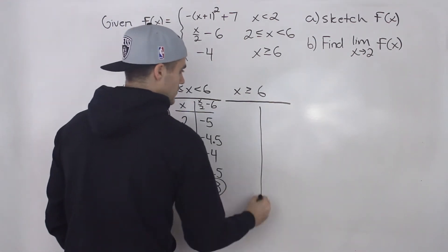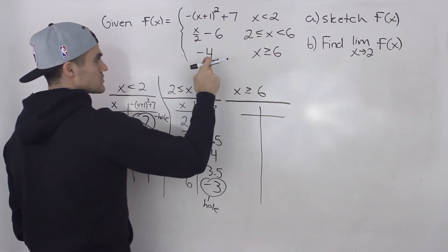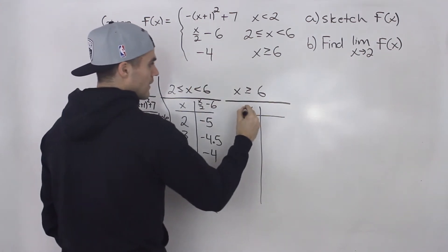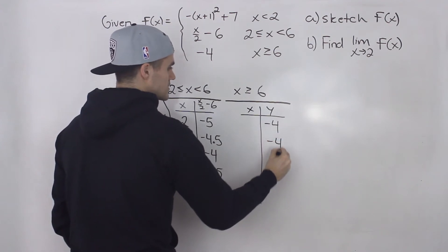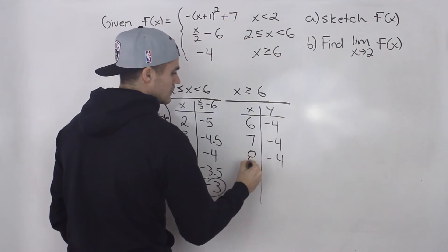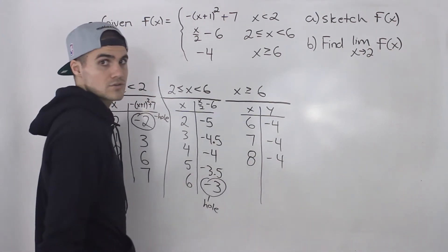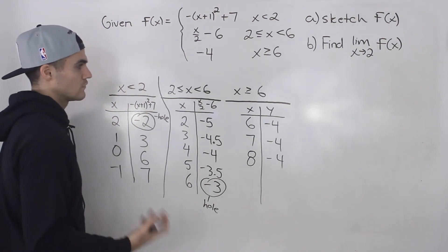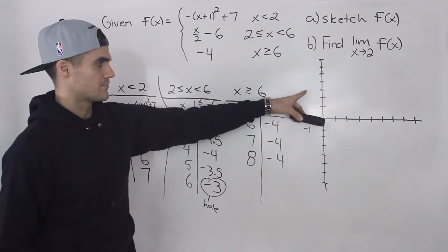And then for this graph, super simple, when x is greater than or equal to 6, all of the y values are basically negative 4. So it's just a horizontal line. So for x value 6, 7, 8, etc, all the way to infinity, y values are all going to be negative 4. So now let's just take these table of values and graph them here.